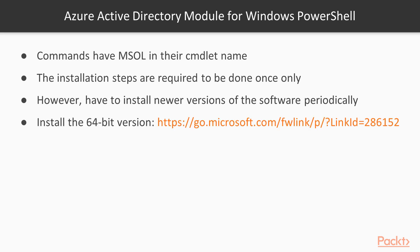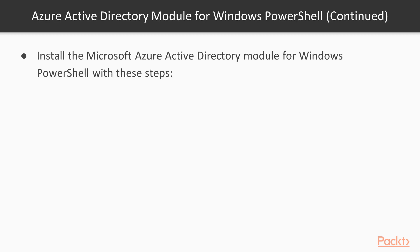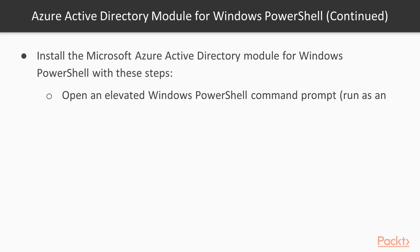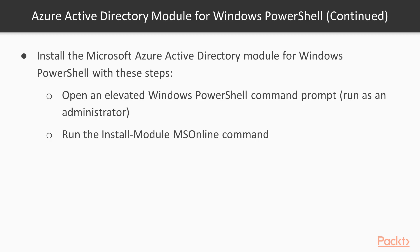Install the 64-bit version of the Microsoft Online Services Sign-in Assistant using the provided link. Then install the Microsoft Azure Active Directory Module for Windows PowerShell by opening an elevated Windows PowerShell command prompt and running the command: install-module MSOnline.